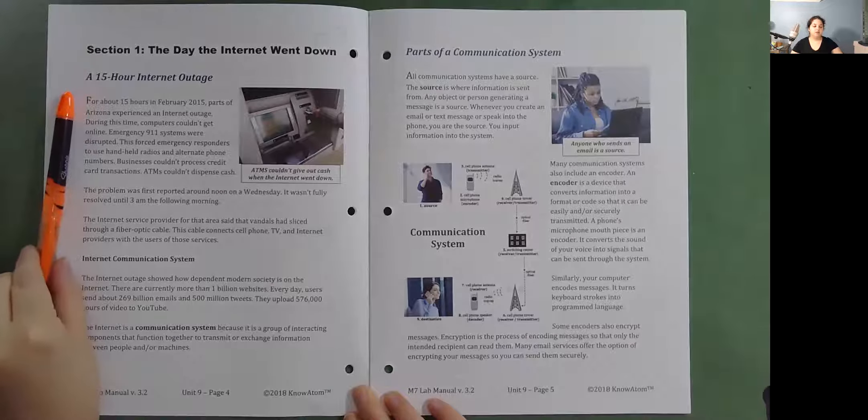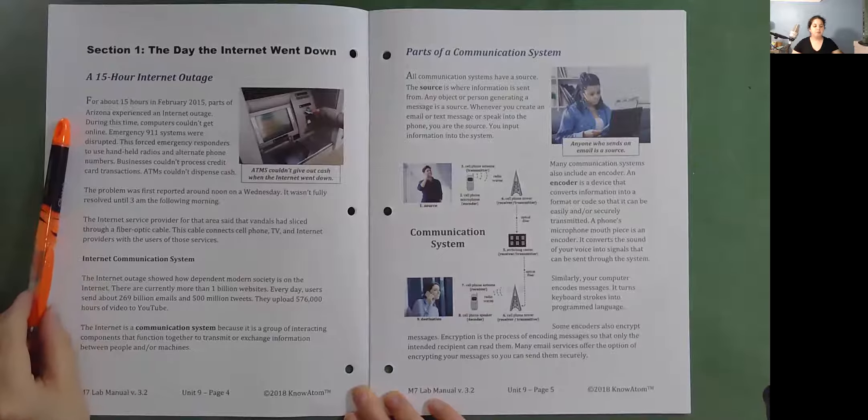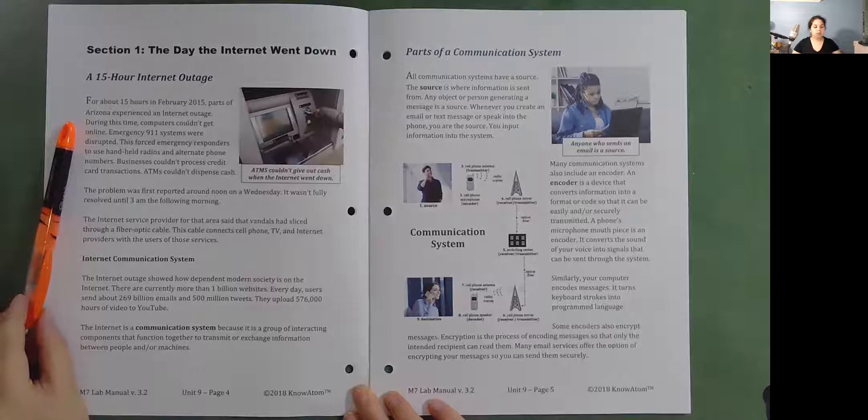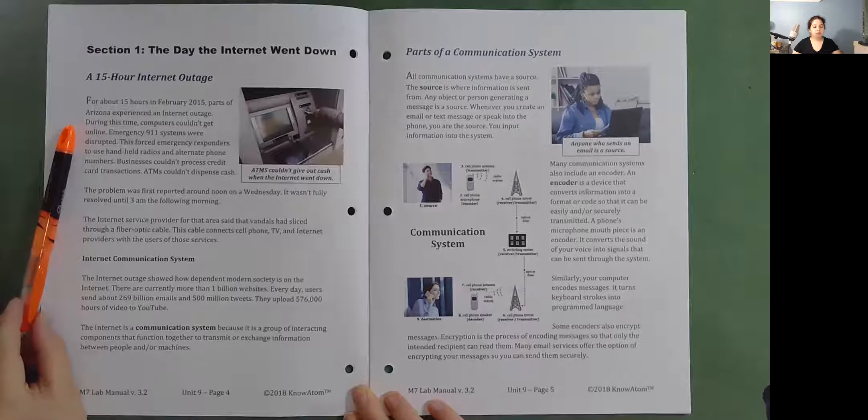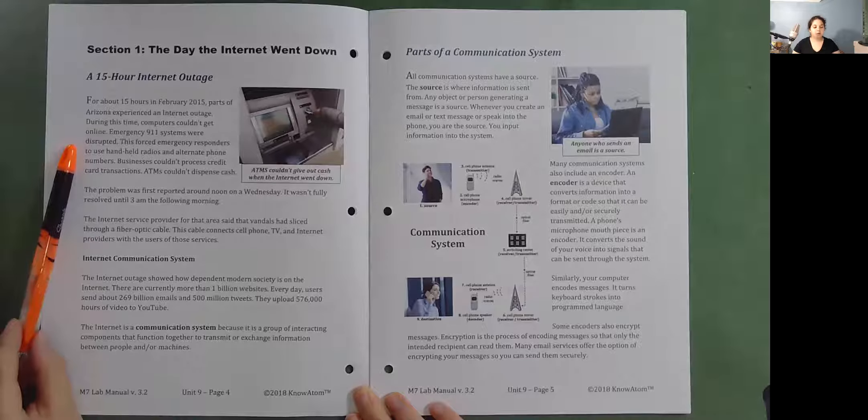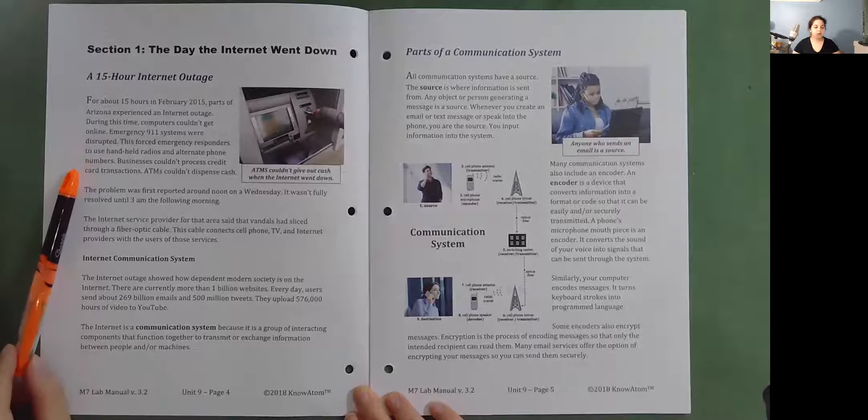A 15-hour internet outage. For about 15 hours in February 2015, parts of Arizona experienced an internet outage. During this time, computers couldn't get online. Emergency 911 systems were disrupted. This forced emergency responders to use handheld radios and alternate phone numbers.